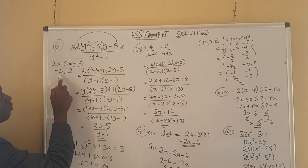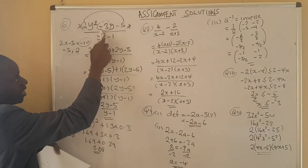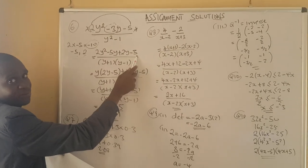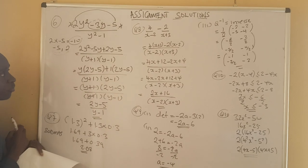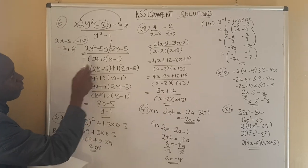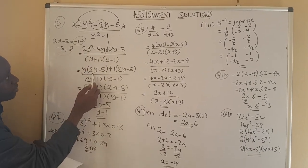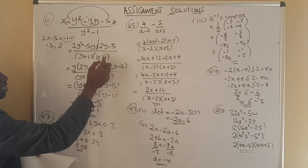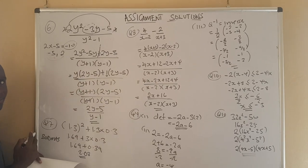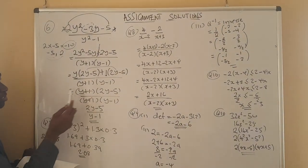We replace negative 3 with negative 5 plus 2. So we write: 2y squared minus 5y plus 2y minus 5. Dividing into two groups: from the first group, y is common, leaving 2y minus 5; from the second group, positive 1 is common, also leaving 2y minus 5. Since both groups give the same bracket 2y minus 5, we are on the right track. The factorization of the top becomes y plus 1 times 2y minus 5.